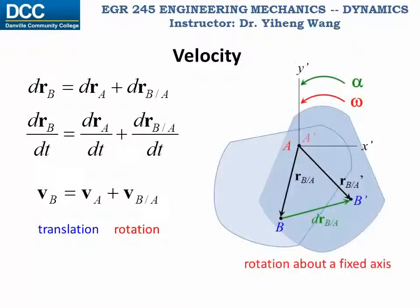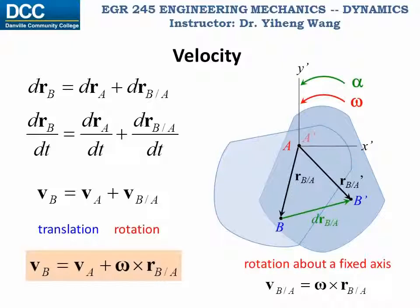From what we've learned before, for rotation about a fixed axis, the linear velocity of any point equals the cross product of omega and its position vector with respect to the center of rotation. Therefore, for a rigid body undergoing general plane motion, the absolute linear velocity of particle B is determined as the absolute linear velocity of particle A plus the cross product of omega, the angular velocity vector of this rigid body, and r_B/A, the relative position vector of particle B with respect to A.